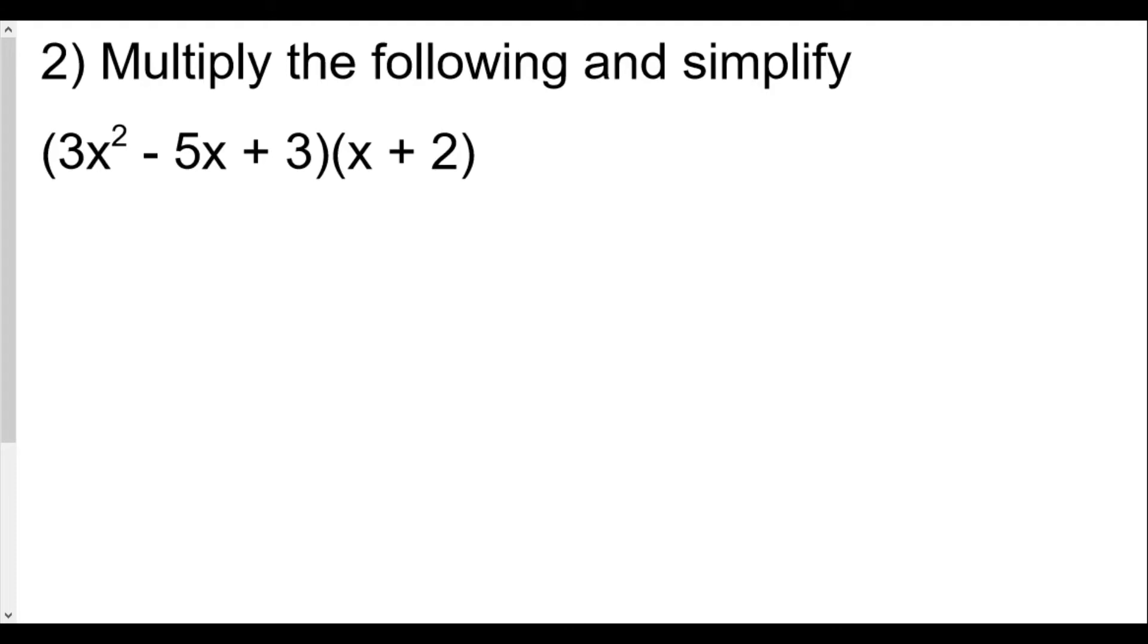Question number two will not be a multiple choice question; it's one you have to write everything out and show work. This is a multiplying question: you're multiplying 3x² - 5x + 3 times x + 2. There are two techniques - distributive property and box method - and I'm going to be showing you box method here.